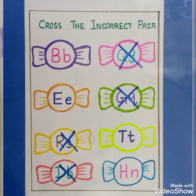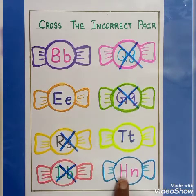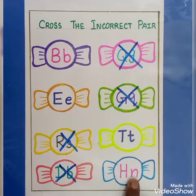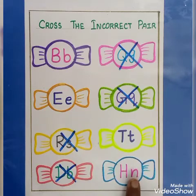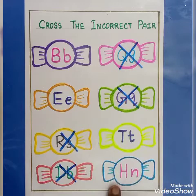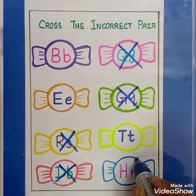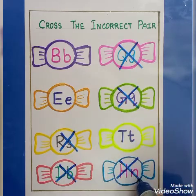The last one. This is capital letter H. This is small letter N. This pair is correct? No. So put cross.